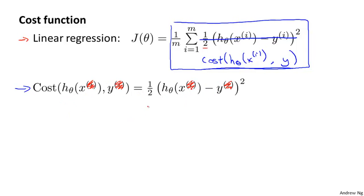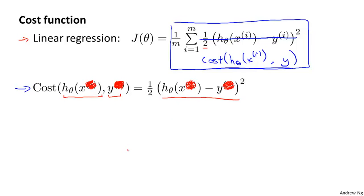The interpretation of this cost function is that this is the cost I want my learning algorithm to pay if it outputs the prediction h(x) and the actual label was y. For linear regression, the cost is 1/2 times the squared difference between what we predicted and the actual observed value of y.